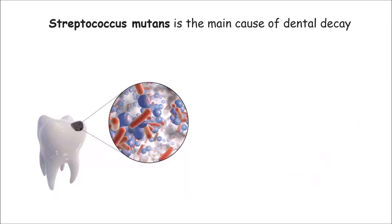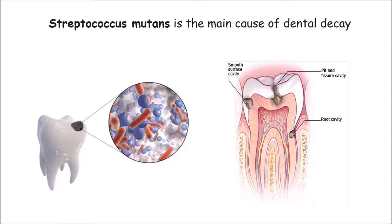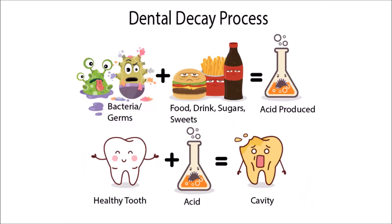Streptococcus mutans is the main cause of dental caries. Caries can precipitate on the surface of the tooth as pit and fissure caries, between two teeth as smooth surface caries, and once your gums recede, you would have root caries also. What happens is you have bacteria on the tooth, and the food substrate — all this together forms an acid, which over a longer period of time causes cavities.